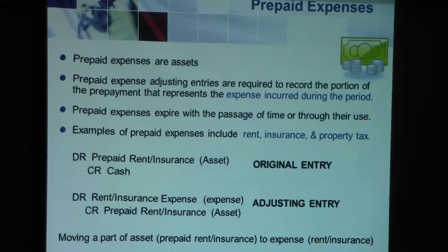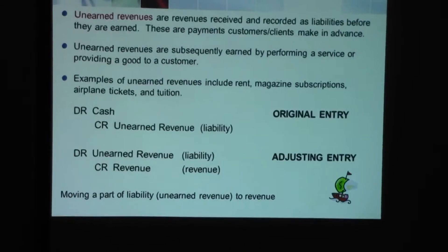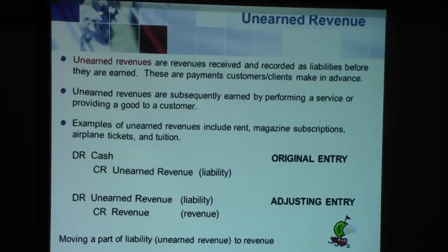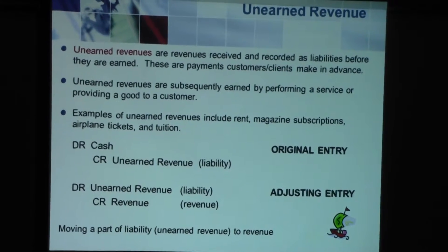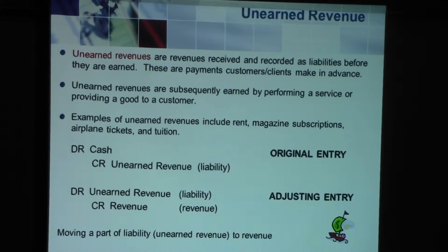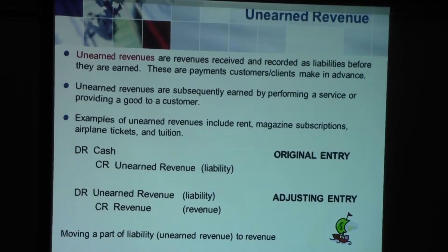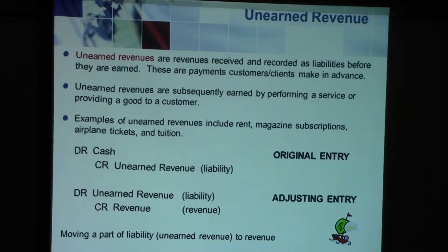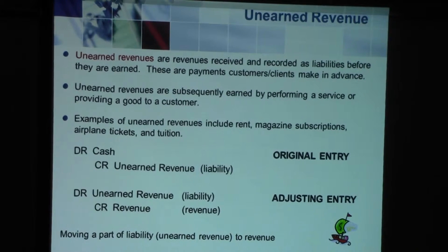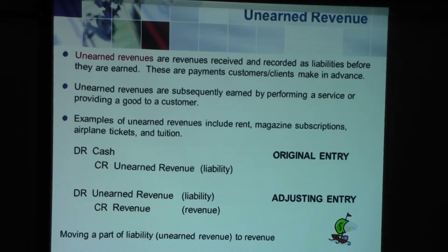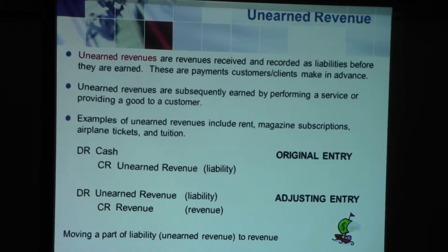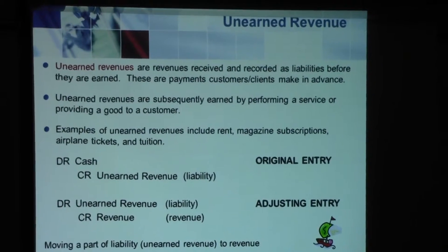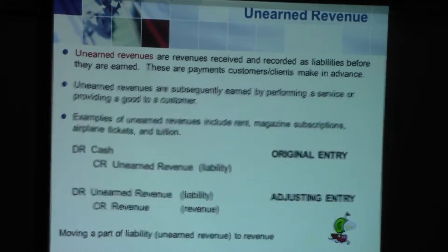Now notice what happens with the next type — unearned revenues. Unearned revenues are amounts of cash received in advance; they will become revenues but have not yet become revenues at this point. This happens quite often in service businesses such as law offices, accounting offices, architect offices, and in the construction business where they look for a deposit up front. When you receive this deposit — this unearned revenue — you debit cash because you received the cash, and credit unearned revenue, which is a liability account.